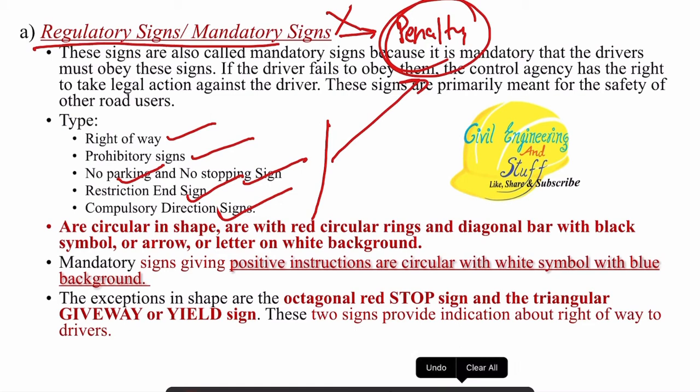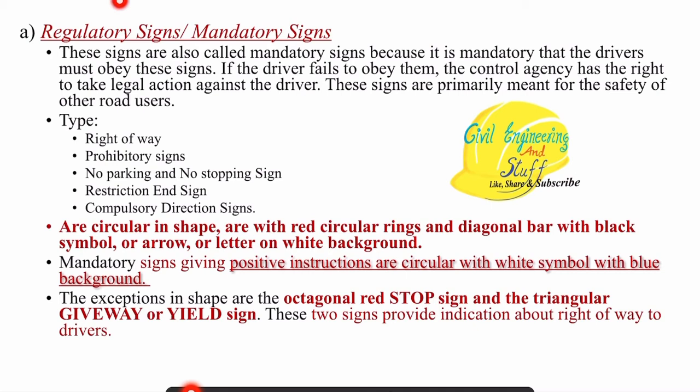There is a certain way in which regulatory or mandatory signs are represented. These signs should be circular in shape. They have a red circular ring and diagonal bar — the circular outer ring will be red, and the diagonal bar if any will also be red. Any symbol used will be black in color — whether it is a symbol, arrow, or letter — black in color with a white background.